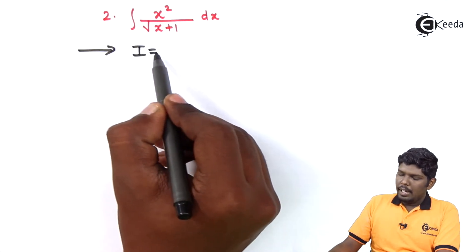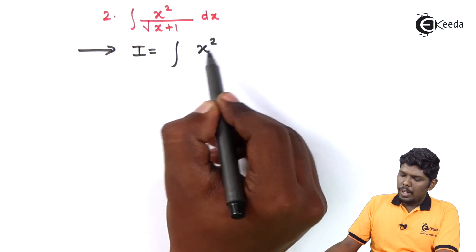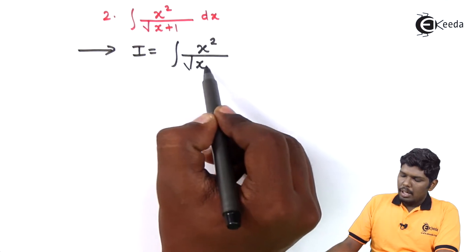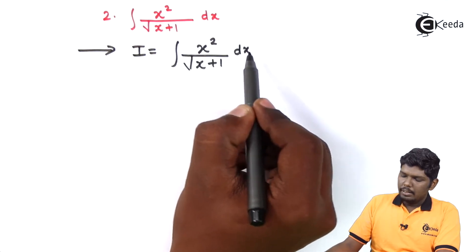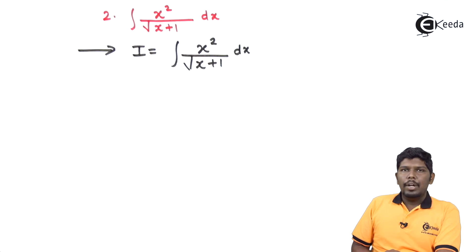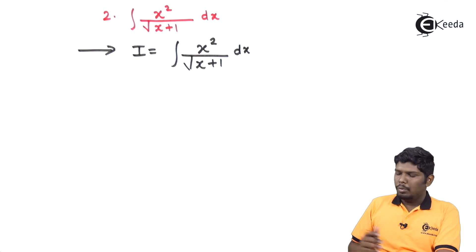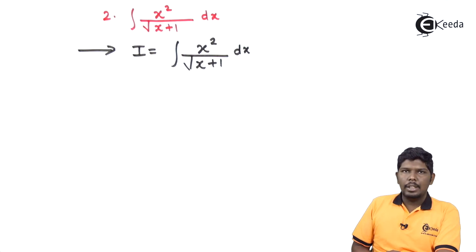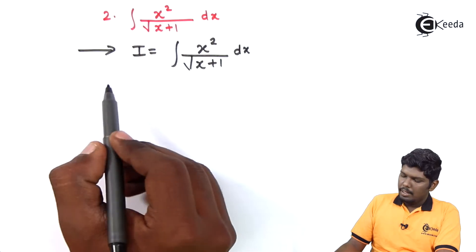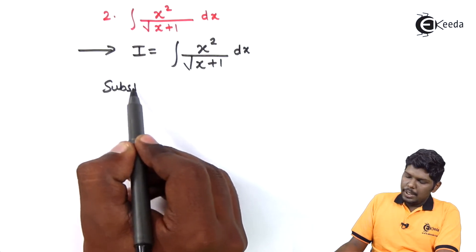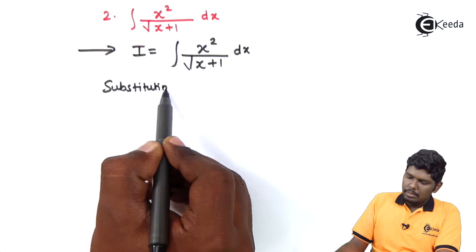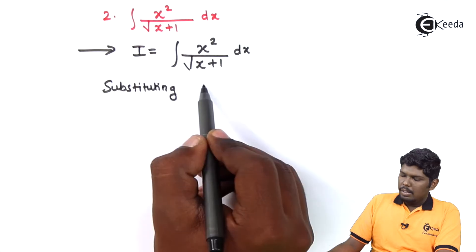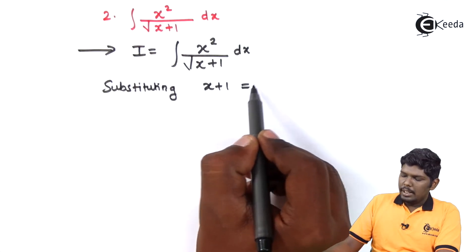Considering the given integral as i, we have x squared upon under root dx. In the previous video we considered the part present in the under root as t. Here also we are going to consider the part inside the square root as t. Substituting x plus 1 equal to t.